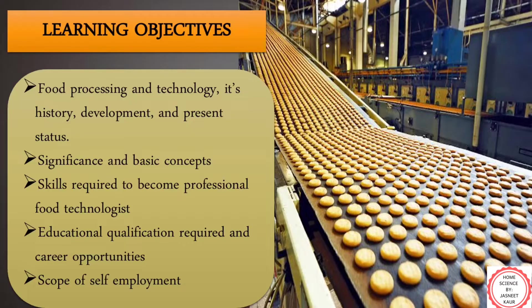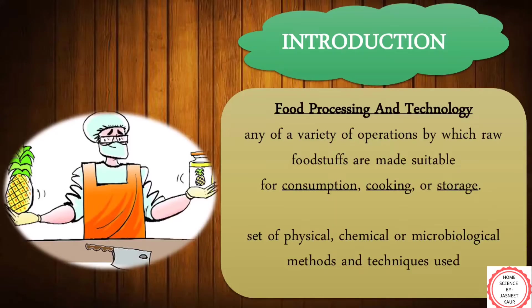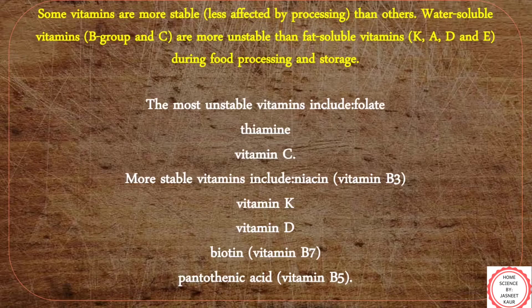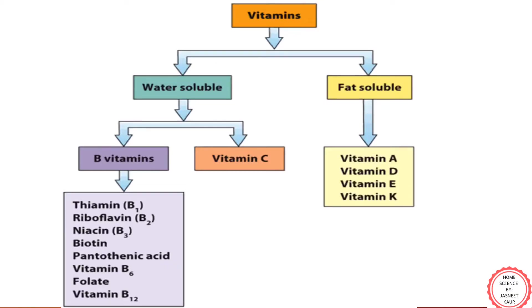Let's begin with understanding the meaning of food processing and technology. Food processing is a process where raw foodstuffs are made suitable for consumption, cooking and storage. For doing this, physical, chemical or microbiological methods and techniques are used. The major purpose is to avoid or reduce the amount of spoilage, and passing foodstuffs through these processes enhances the shelf life of nutrients.